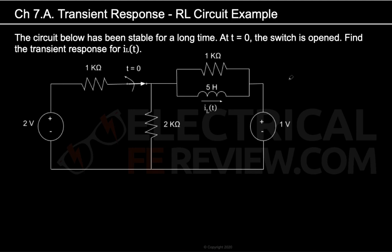In this question, we're given a circuit and we're asked to find the transient response of IL, the current flowing through the inductor. Notice that in the question, it states that the circuit below has been stable for a very long time. What does that mean?